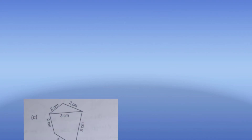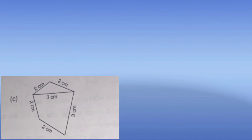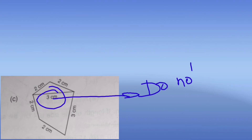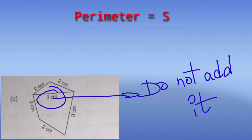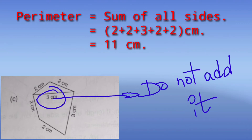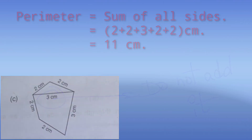Part c is slightly different. Here again there is a line in the middle, and we are asked for the perimeter. We will NOT consider the middle line of 3 cm. So: 3 + 2 + 2 + 2 + 2 = 11 cm. The middle line of 3 cm is not considered.